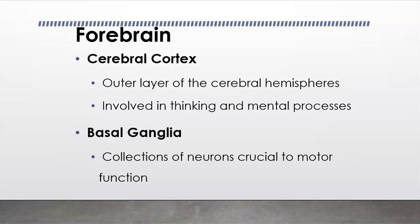The basal ganglia are a collection of neurons crucial to motor function. With the basal ganglia, think motor function; with the cerebral cortex, think thinking, mental processes, and some personality.